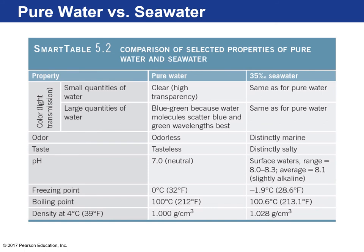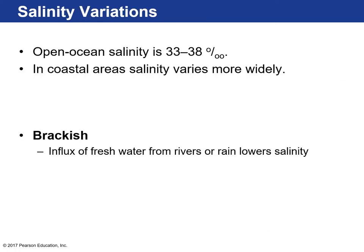Comparing pure water to seawater: the freezing point is lower in seawater — it must get much colder to freeze. The boiling point is slightly higher. The density of seawater is greater than that of pure water because of all the dissolved solids. In open oceans, salinity varies between 33 and 38 parts per thousand. In coastal areas near continental shelves, salinity can vary more widely — higher in areas with high evaporation, or lower where rivers dump fresh water into coastal areas.